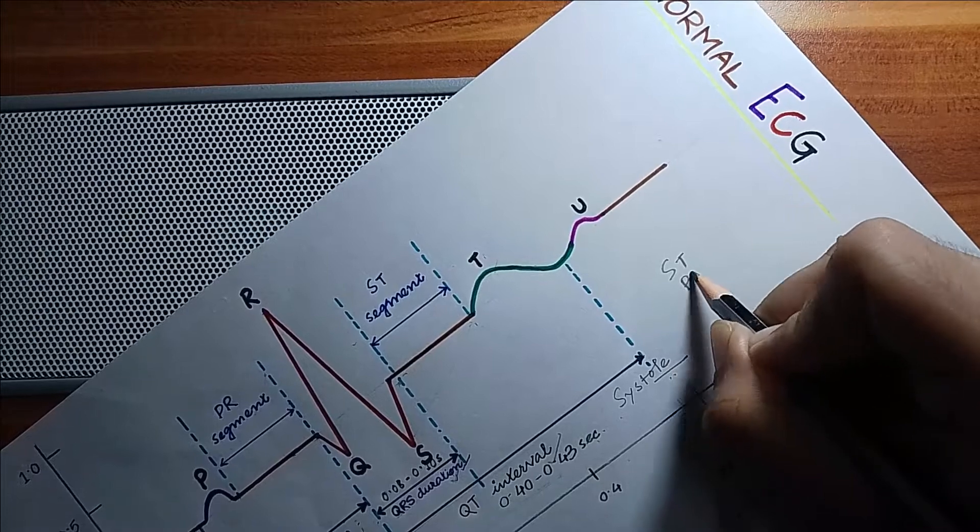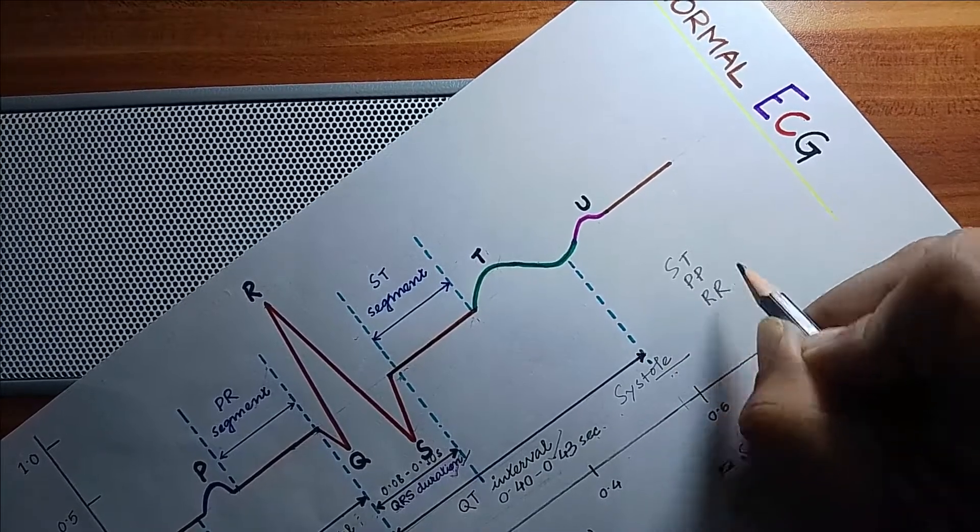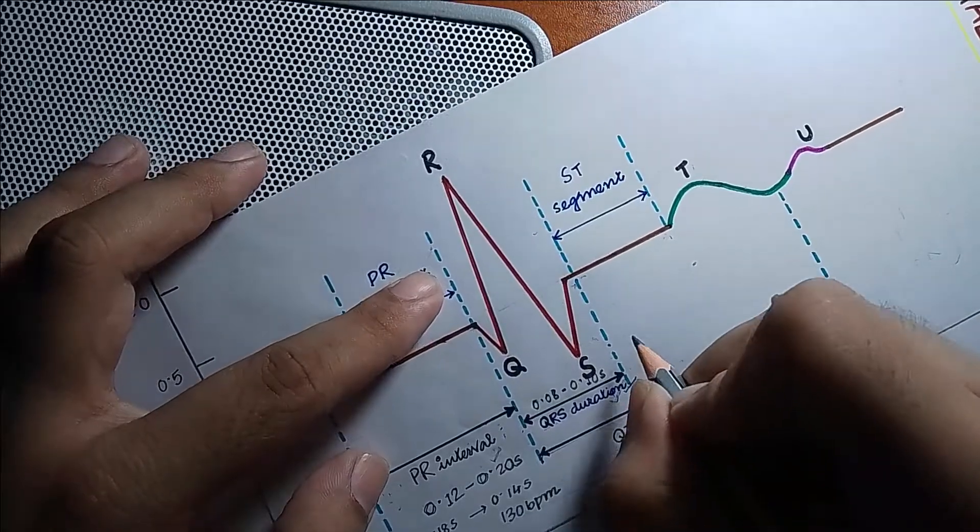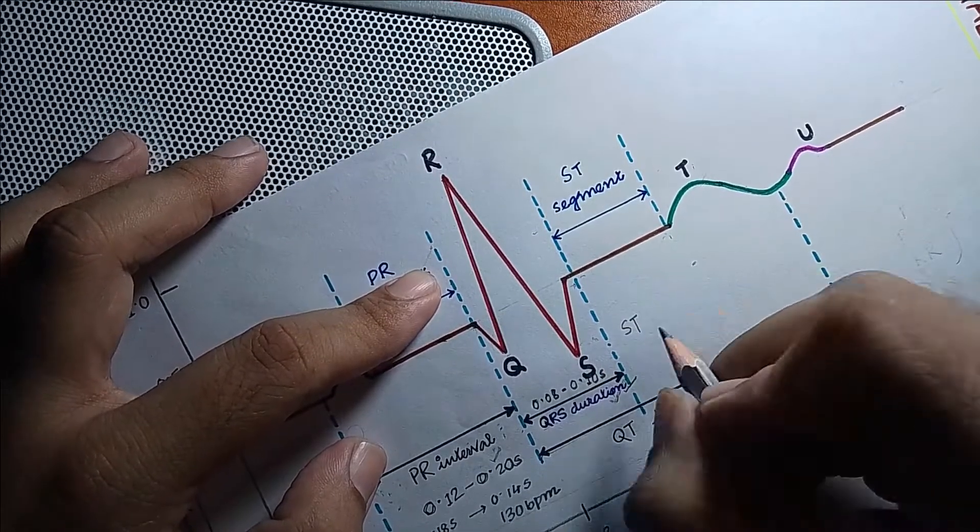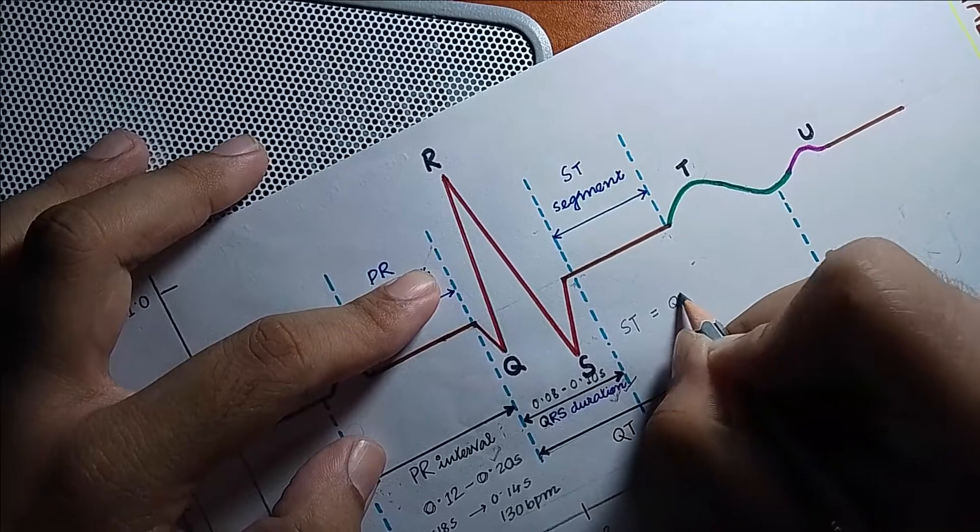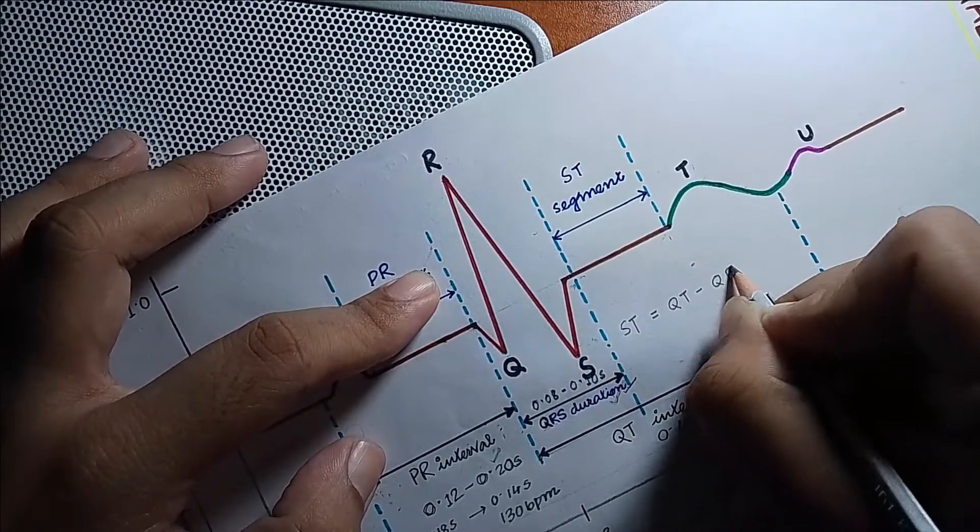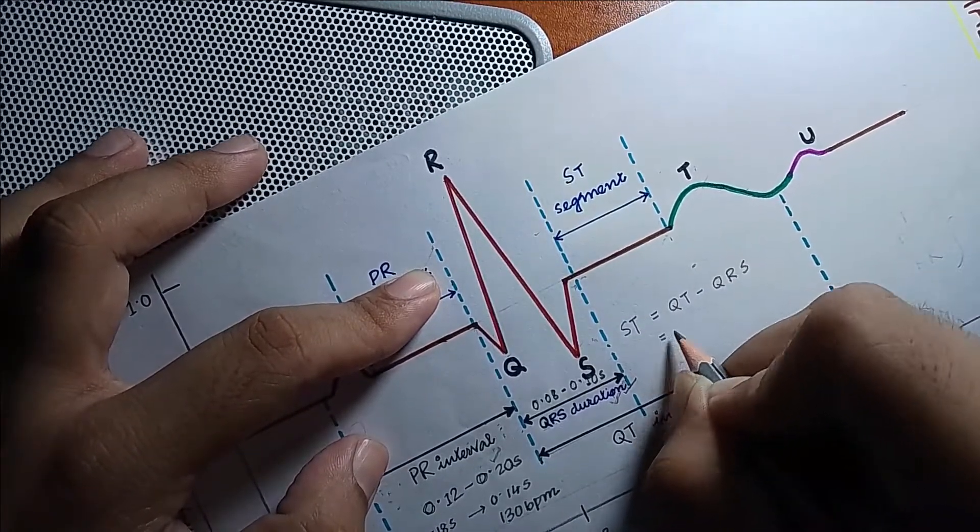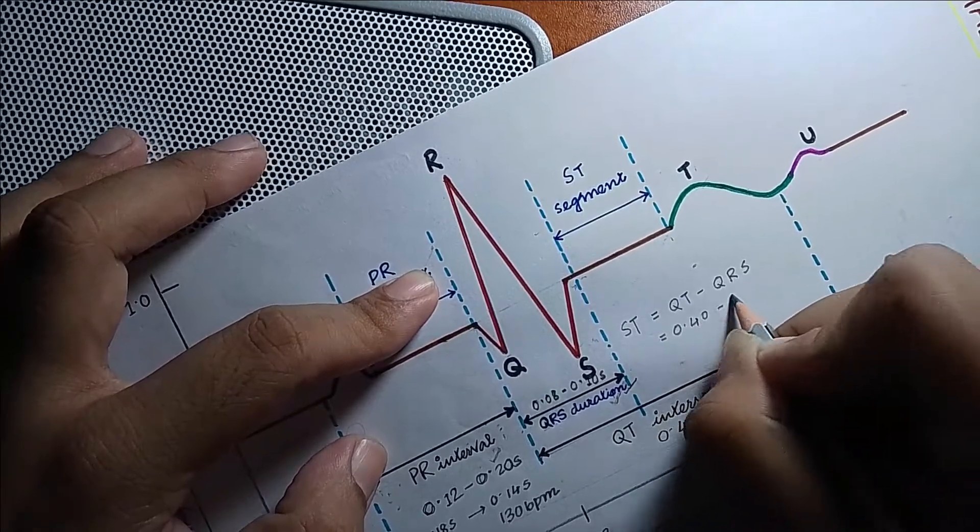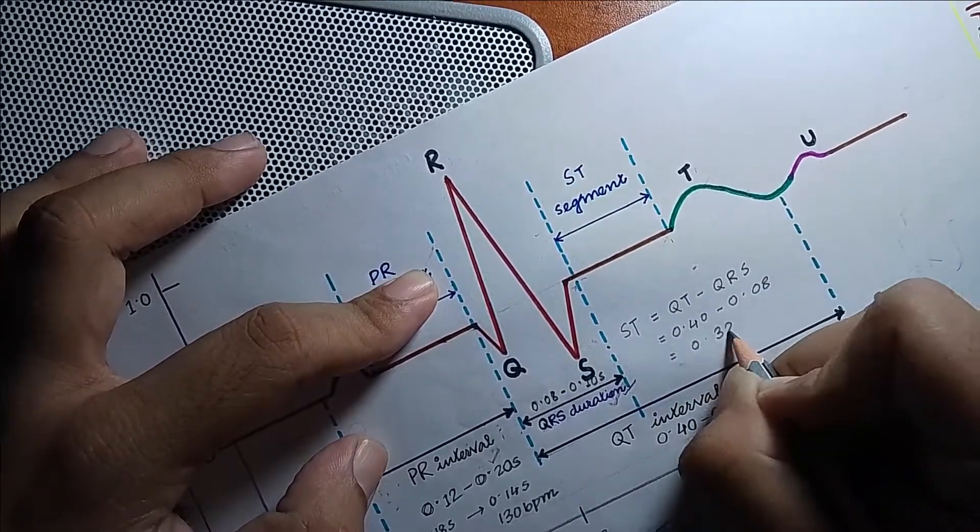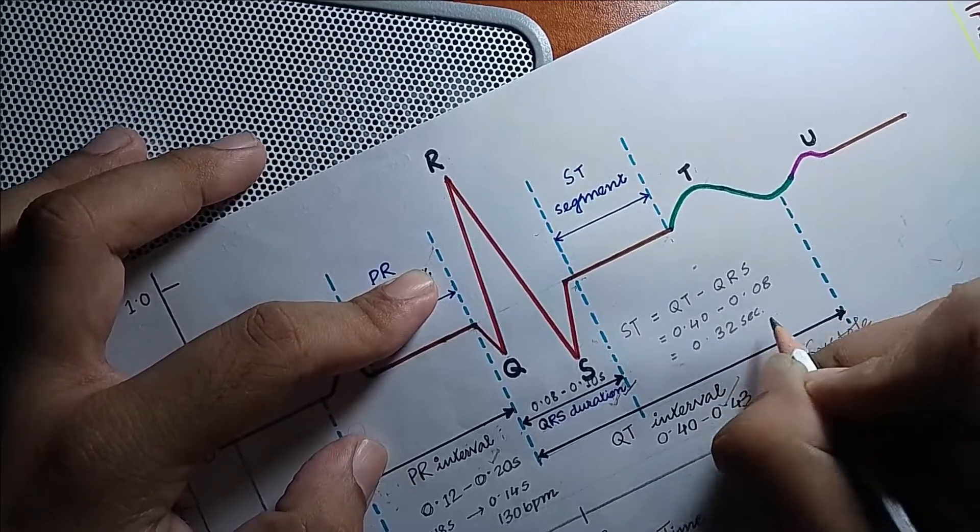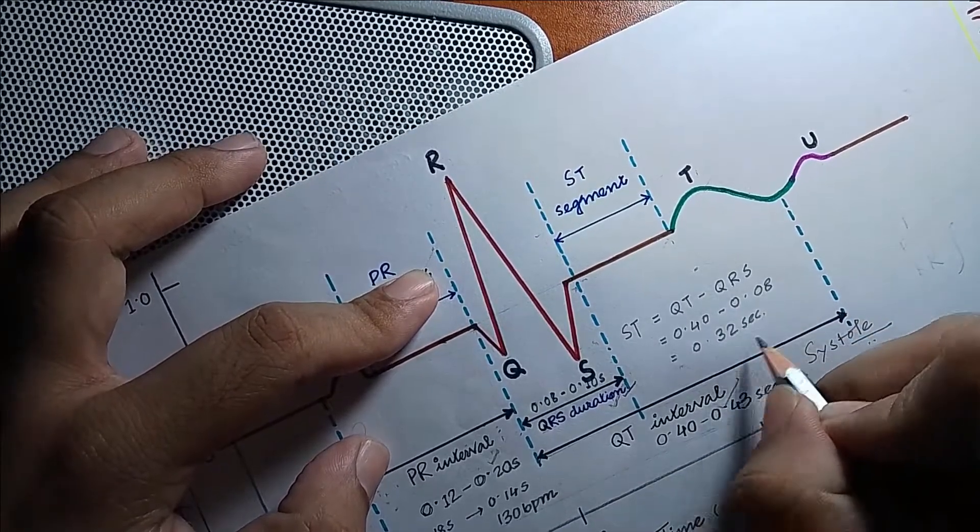First is your ST interval. From S to T, it is basically the QT minus QRS, so 0.40 minus 0.08, that is 0.32 seconds. This represents ventricular repolarization.